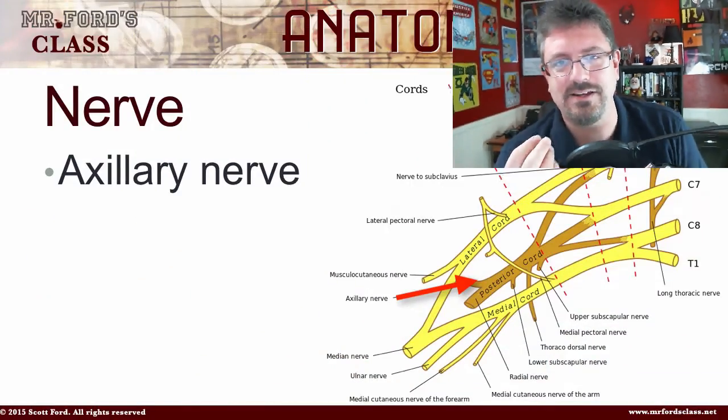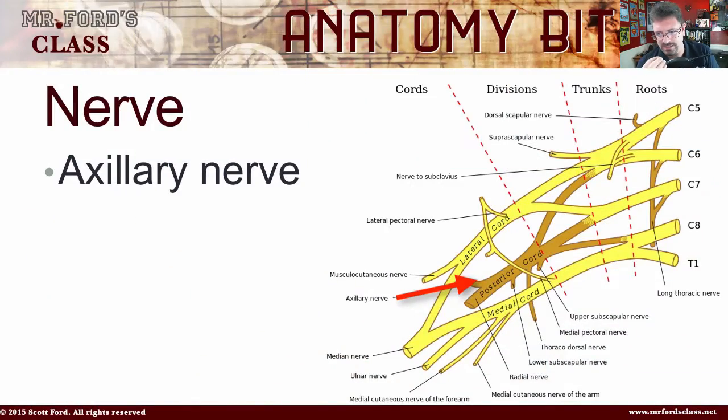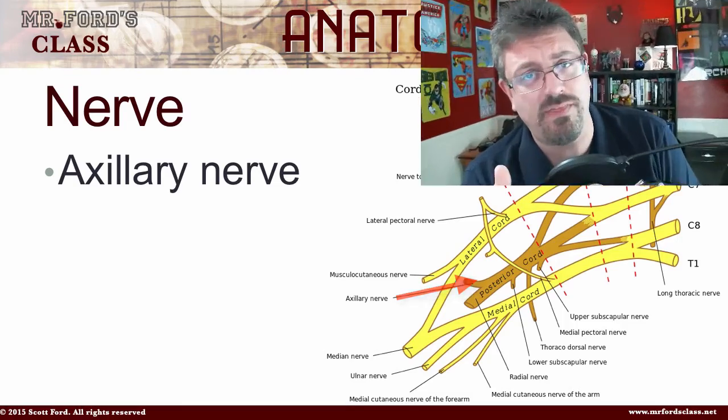The nerve of the deltoid is the axillary nerve — the armpit nerve. You can see in this diagram where this nerve is coming from. We're not going to get into the cervical plexus in this video — we'll maybe do a separate video on that because it's a lot of fun. But for now, just know that it's the axillary nerve.